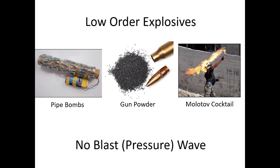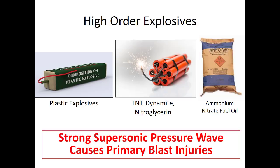There are two types of explosives important to know, and this differentiates the kind of injury patterns you would see. Low-order explosives do not have a blast or pressure wave. These include pipe bombs, gunpowder, or Molotov cocktails — they are not large enough to cause an increase of pressure in the surrounding atmosphere. The ones we really worry about and that are most destructive are high-order explosives: plastic explosives or C4, dynamite, nitroglycerin, ammonium nitrate fuel oil — all of which can be accessed on the internet. What makes them dangerous is that they create a really strong supersonic pressure wave that initiates a series of blast injuries to the surrounding area and to patients within the blast range.